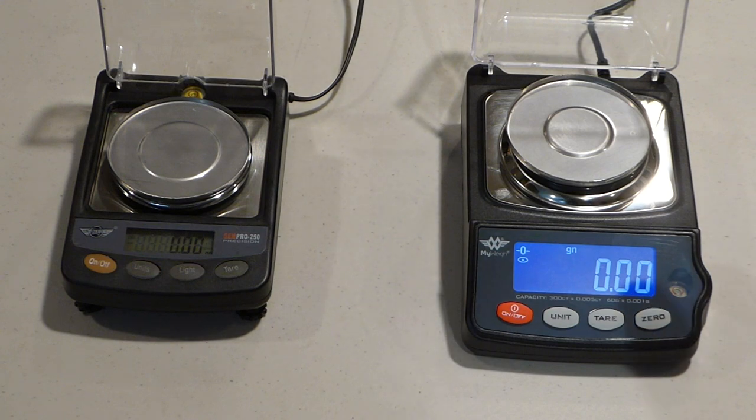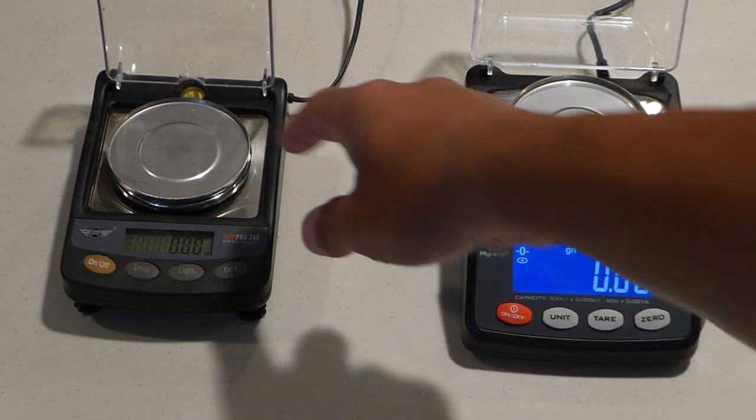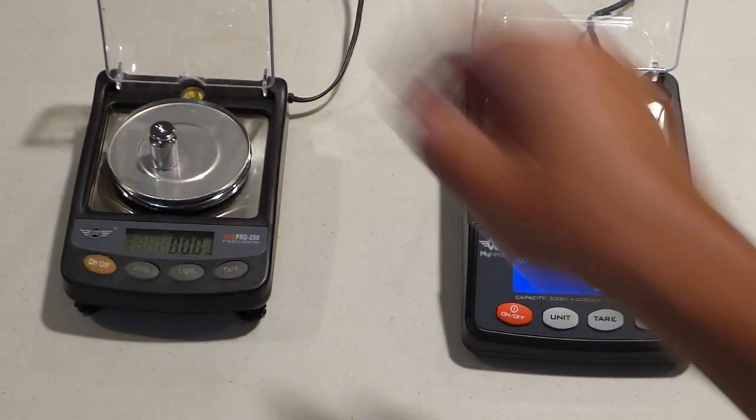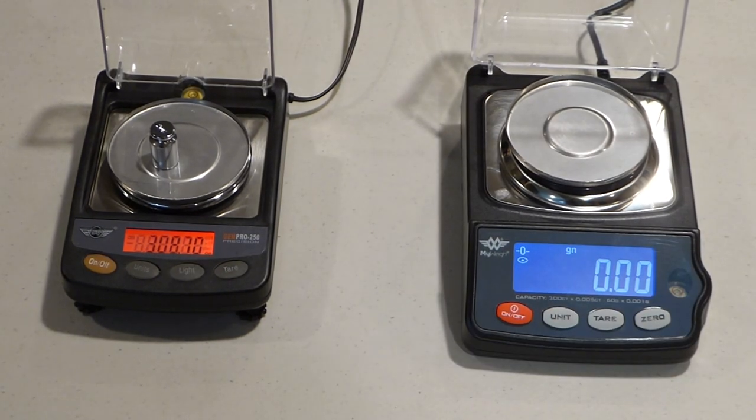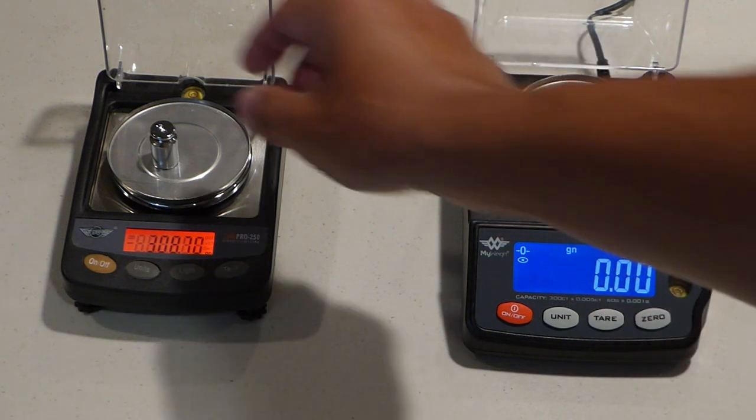You can also see that the GEMPRO 300, as I'm going to refer to it, the display is lit up all the time, where on the 250, the display only lights up when you put a weight on it. The 250 has an orange display, the 300 has a blue display with white characters. I think the 300 is easier to read, I would go with this one just based on that fact alone.